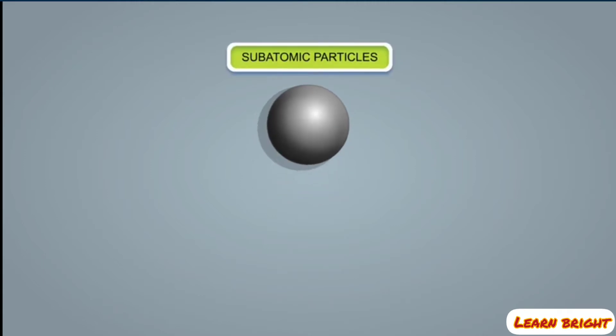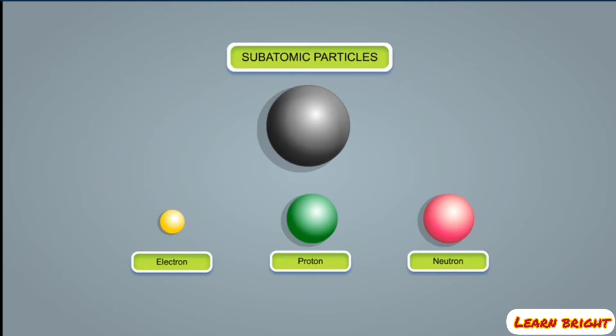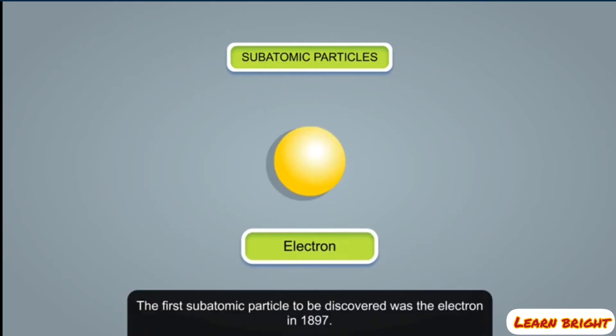However, over a period of time, the discovery of subatomic particles—the electron, proton, and neutron—proved that atoms are not indivisible. Since then, different models have been proposed to explain the structure of an atom. The first subatomic particle to be discovered was the electron.